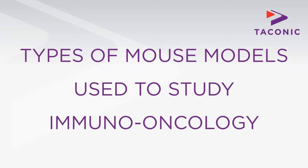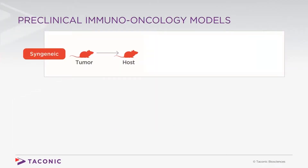First are the syngeneic models, in which a mouse tumor is implanted into a genetically identical and immunocompetent host. Since the tumor cells in the host's immune system are matched with respect to histocompatibility loci, this tumor is not rejected by the host's immune system. Inbred strains are invaluable for these studies as they provide a consistent genetic background.